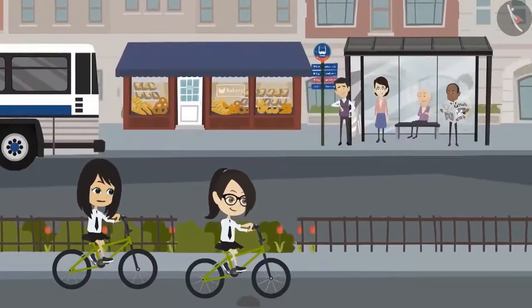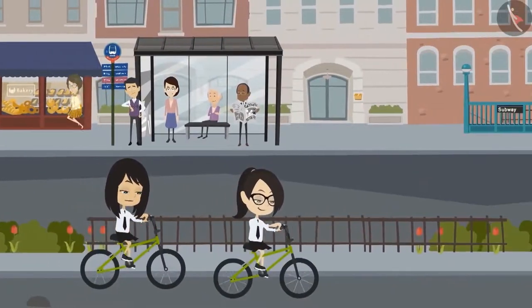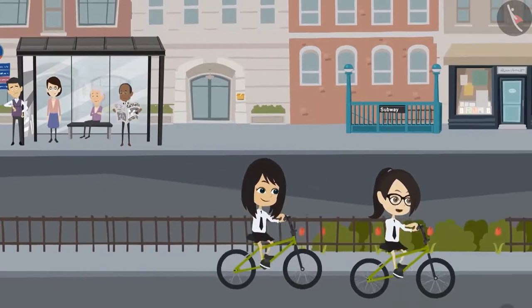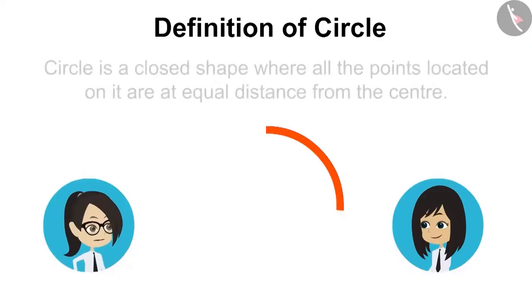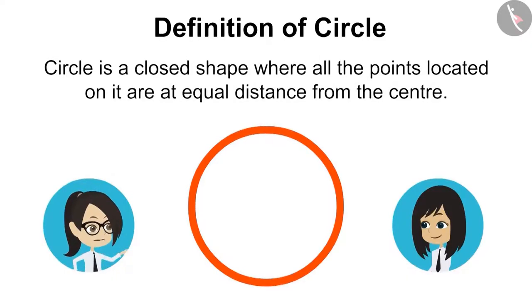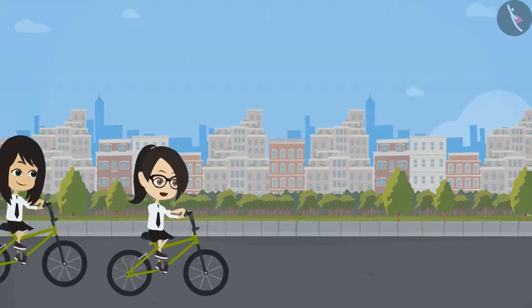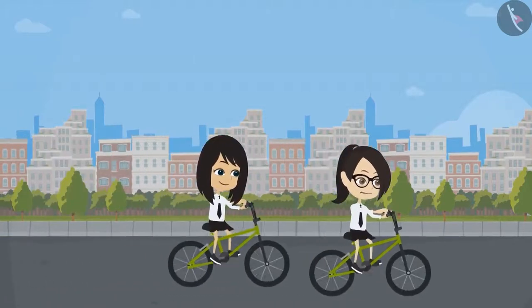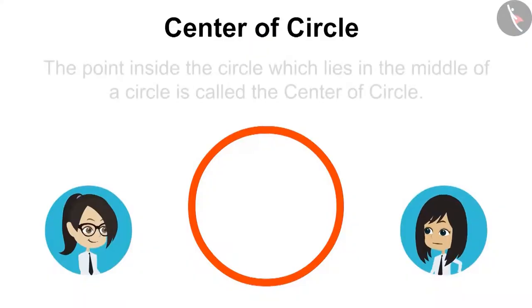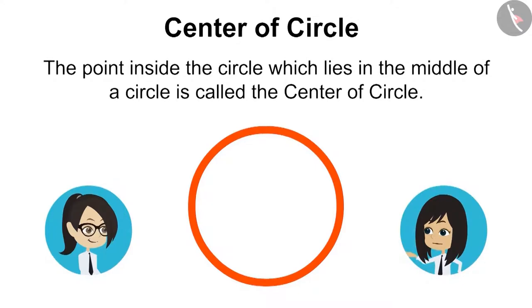Remember, what did sir tell us about circle yesterday? Yes, I remember it well. Circle is a closed shape where all the points located on it are at an equal distance from the center. Do you remember what the center of circle is? Yes, I remember. The point inside the circle which lies in the middle of a circle is called the center of circle.